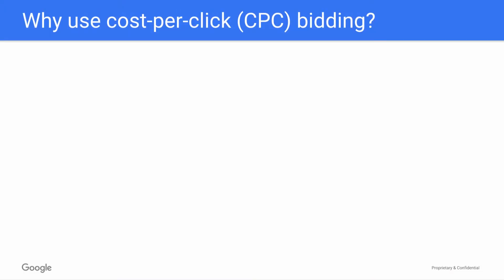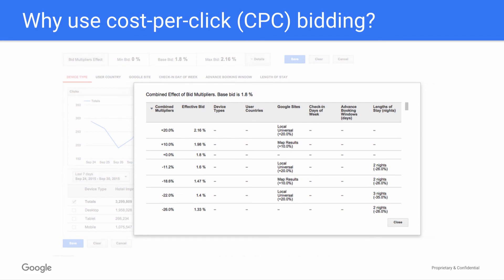This video covers how you can use cost-per-click, or CPC bidding, to bid on your Google Hotel Ads. Let's start with some reasons why you might choose to use CPC bidding. CPC bidding lets you specify the most you're willing to pay for a click on a hotel ad, and you only pay when somebody actually clicks on your hotel ad, often less than your max CPC bid. If you plan to actively manage your hotel ads campaign, using CPC will give you granular controls to optimize your performance based on your marketing and distribution strategy.